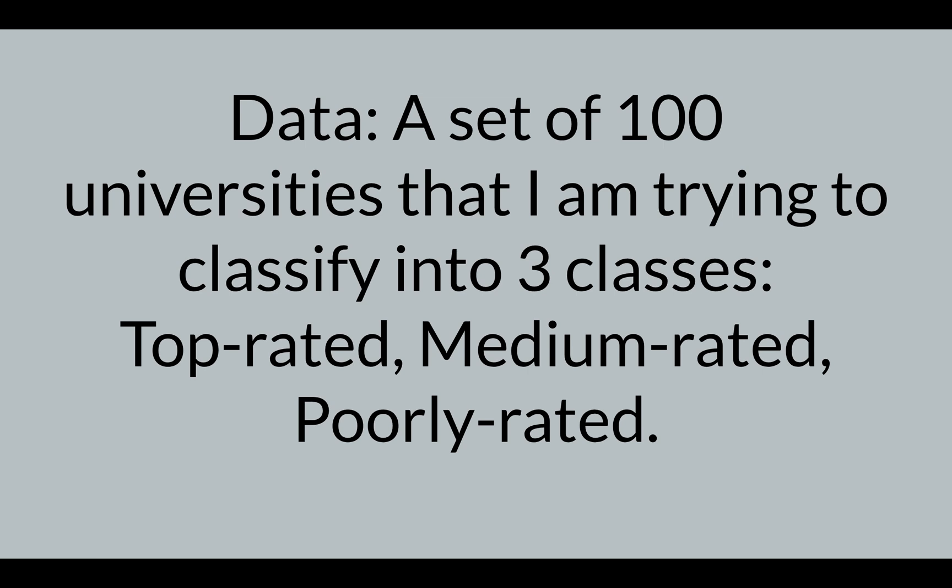My data contains a number of different features or characteristics about these universities. For example, what is the tuition fee of each university, where is it located, what is the placement percentage, what percentage of people are graduating every year, what kind of research is happening, what kind of professors are there, scholarships, and then I feed this data into my decision tree algorithm.